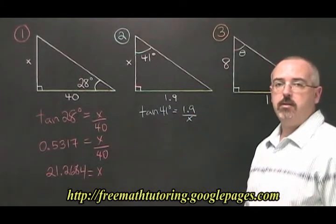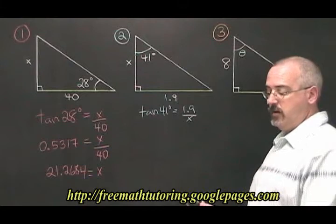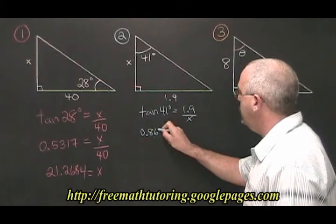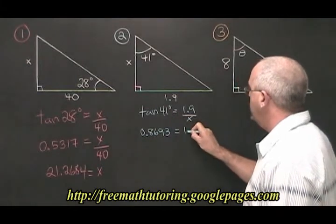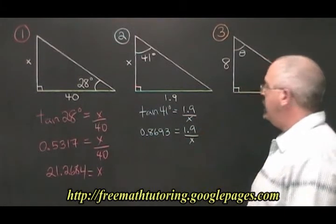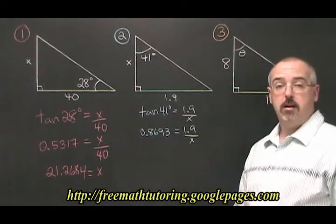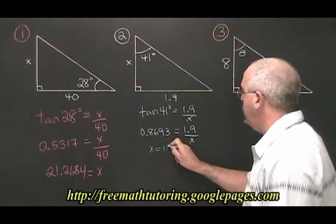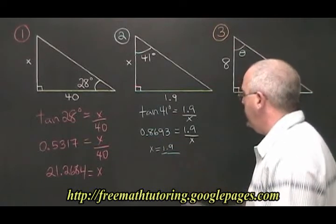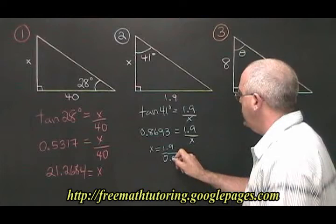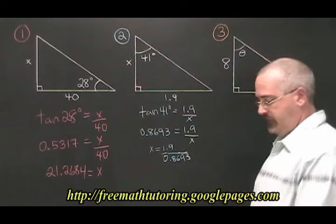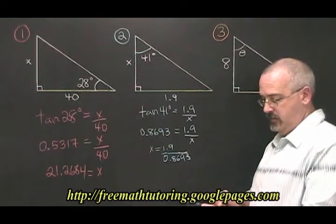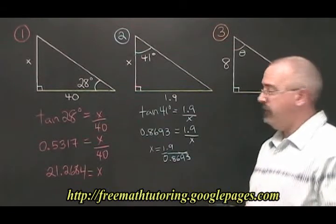We replace TAN of 41 degrees with its value from the calculator, which is 0.8693. 0.8693 equals 1.9 over X. And then, since our variable is in the denominator, we do the trade. X is equal to 1.9 divided by 0.8693, which is equal to 2.1857.